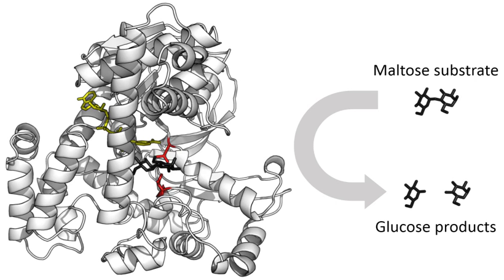Following Buchner's example, enzymes are usually named according to the reaction they carry out. The suffix –ase is combined with the name of the substrate (e.g., lactase is the enzyme that cleaves lactose) or to the type of reaction (e.g., DNA polymerase forms DNA polymers). The biochemical identity of enzymes was still unknown in the early 1900s. Many scientists observed that enzymatic activity was associated with proteins, but others such as Nobel laureate Richard Willstätter argued that proteins were merely carriers for the true enzymes and that proteins per se were incapable of catalysis.